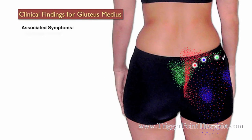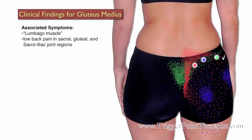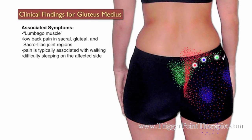Clinical findings for gluteus medius trigger points: Dr. Travell calls this muscle the lumbago, or low back pain muscle. Clients with active trigger points here will commonly complain of low back pain in the sacral, gluteal, and SI joint areas. The pain is typically associated with walking, and they may also have difficulty sleeping on the affected side.